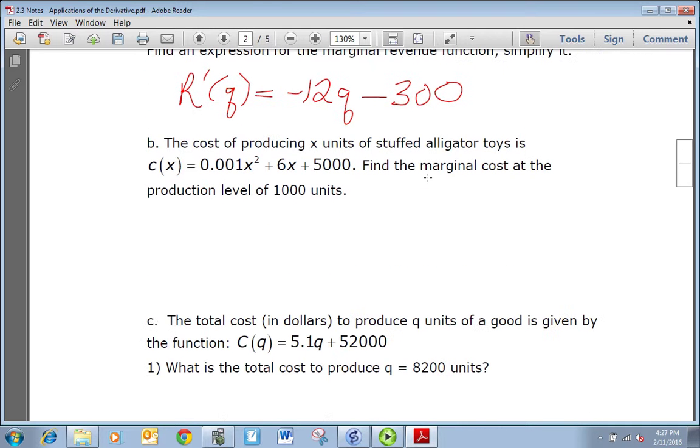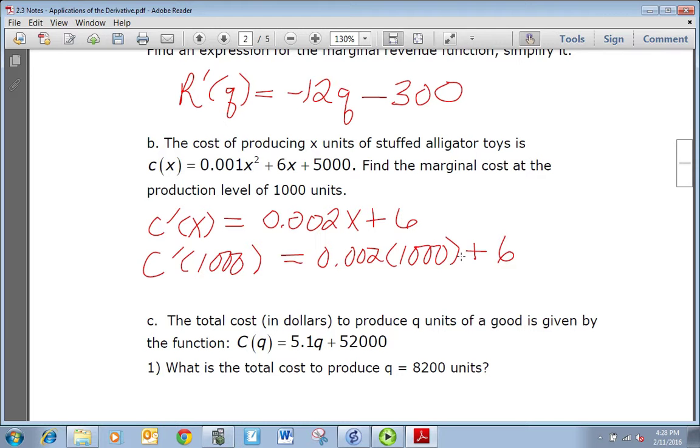Part b: the cost of producing x units of stuffed alligator toys is C(x) = 0.001x² + 6x + 5000. Find the marginal cost at the production level of 1000 units. So again we want to start by finding C'(x), which is going to be 0.002x + 6. And at 1000 units we just need to plug 1000 in for x and we get 0.002 times 1000 plus 6. Well, a thousand times 0.002 is just 2, and 2 plus 6 is 8, so that'll be the marginal cost at a thousand units.